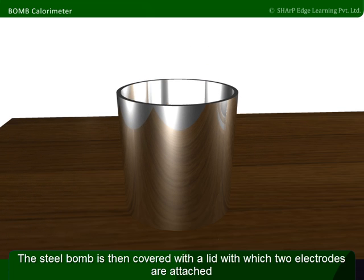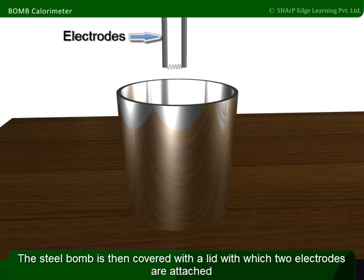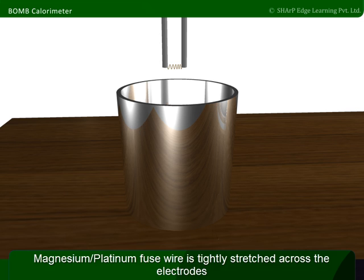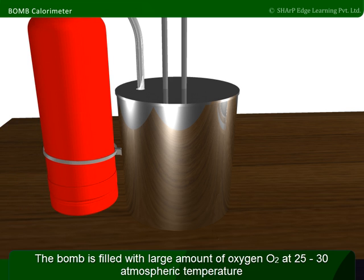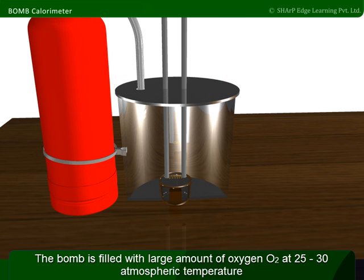The steel bomb is then covered with a lid with which two electrodes are attached. Magnesium or platinum fuse wire is tightly stretched across the electrodes. The bomb is filled with a large amount of oxygen at 25 to 30 atmospheric pressure.